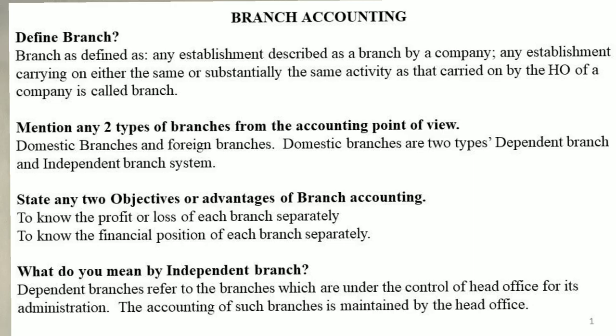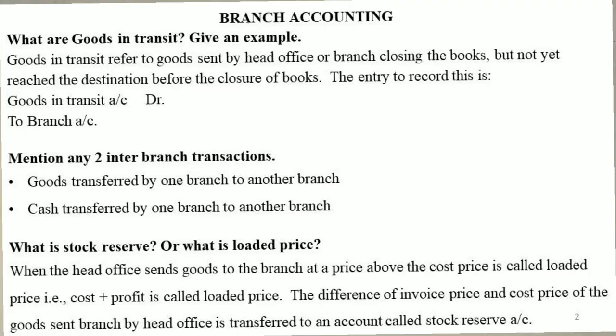What is goods in transit? Goods in transit refers to goods sent by the head office or branch before closing the books, but not yet reached the destination before the closing of accounting books. The journal entry for goods in transit is: Goods in Transit Account debit, to Branch Account.